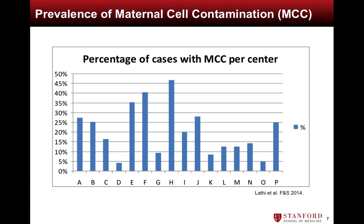This figure demonstrates the percentage of cases with MCC across fertility centers in the United States. Some centers have less than 5 percent MCC rates, while others had MCC in nearly half their specimens. We postulate that the high variability of MCC rates across fertility centers can be attributed to differences in the technique utilized for separating villi from maternal cells.